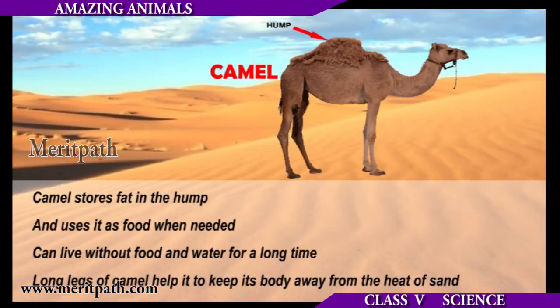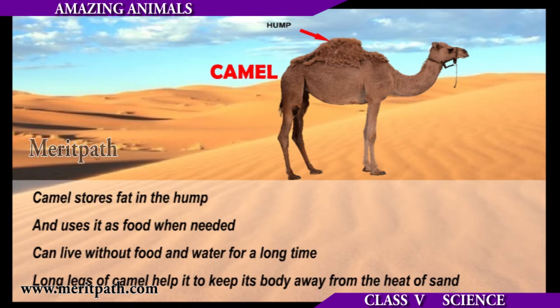A desert is a dry and hot place where very few animals live. Animals that are mostly seen in the desert can withstand the high temperature of the desert region.